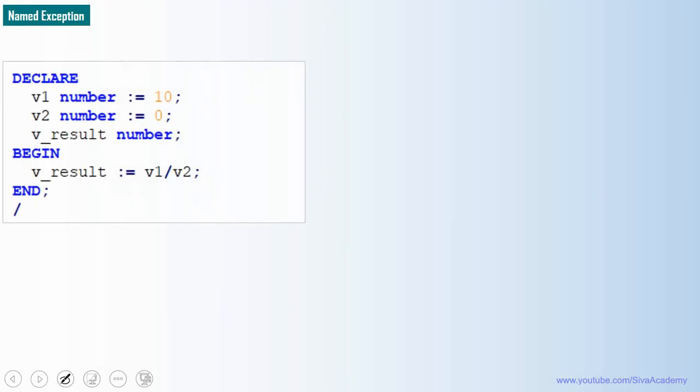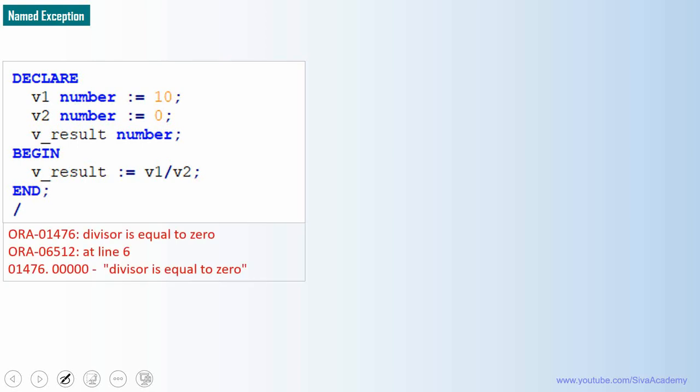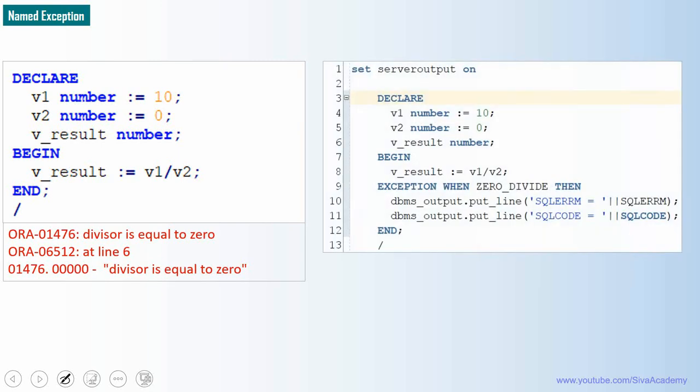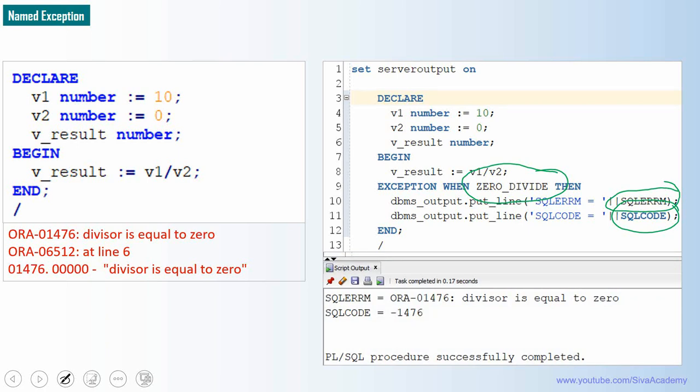First, let us start with a named exception block. This is almost the same example. Since here denominator evaluates to zero, this returns the exception divisor is equal to zero. To capture this exception, we can use the SQLERRM function and SQLCODE function. When we execute this block, since this is a named exception, I'm handling the exception using the zero_divide name. When we execute this block, SQLERRM will return the description. So the description includes the code as well. Whereas SQLCODE returns only the code. This portion that is minus 01476, this we will be able to get using the SQLCODE function.